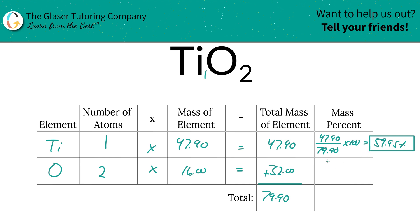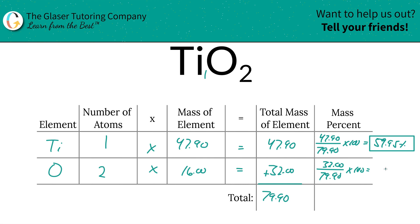Take the total mass of the element oxygen here at 32 — 32 units of mass — and divide it by the entire compound mass, 79.90, and then calculate this entire thing. And we're going to get 40.05%.